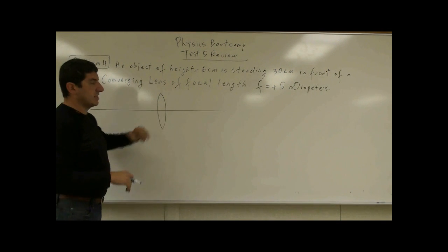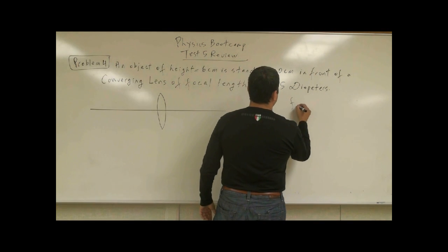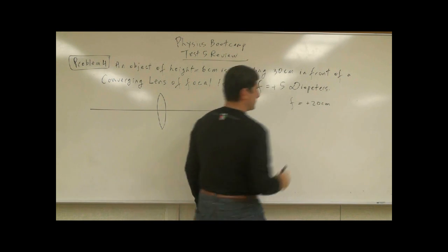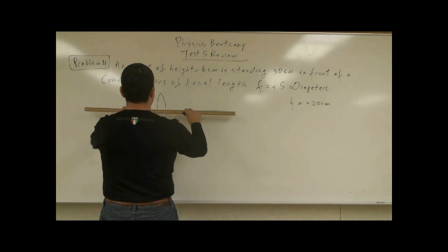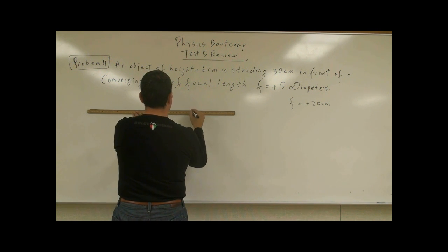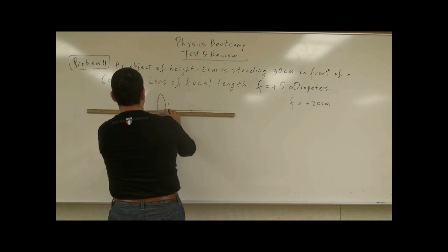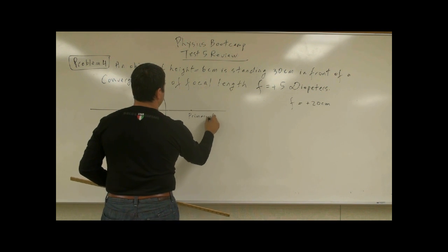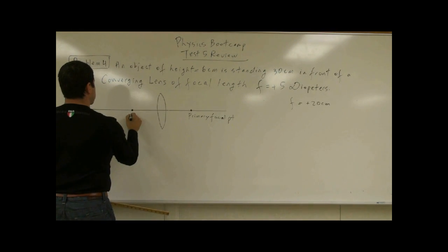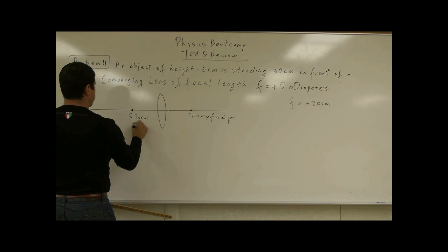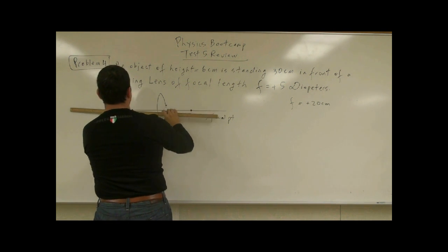Here I have the drawing again. What's the focal length going to be? Since the focal length is positive 5, it's going to be positive — f is going to be positive 20 centimeters. Where is the primary focal point? The primary is on the right side, so go 20 to the right, and then 20 to the left — that's the secondary. So primary focal point here, secondary focal point there, and the object is six centimeters up again.